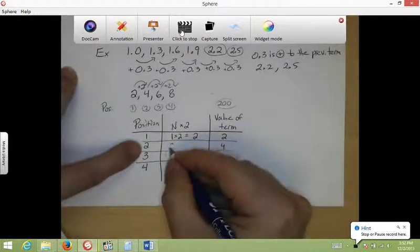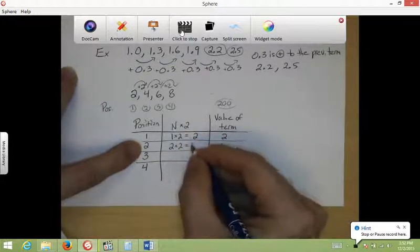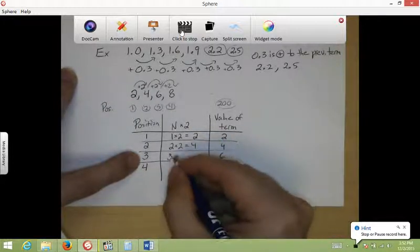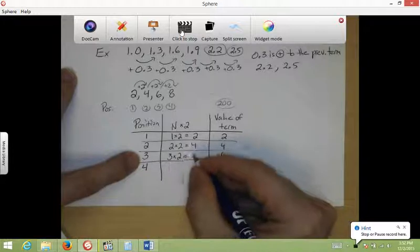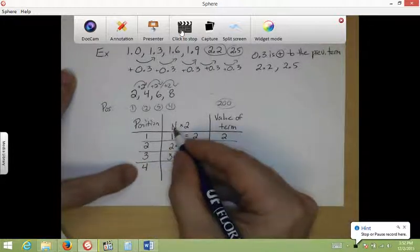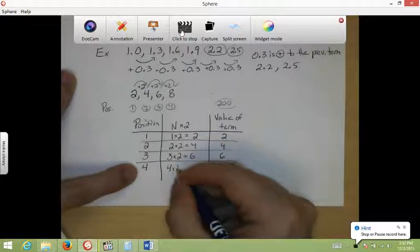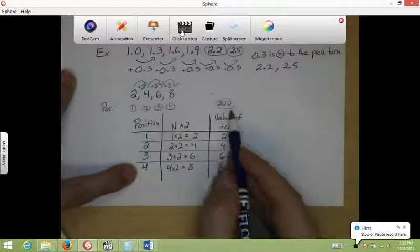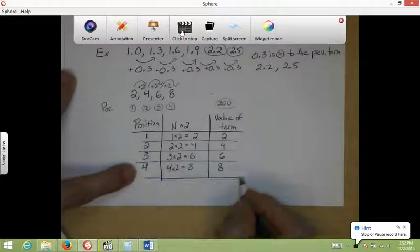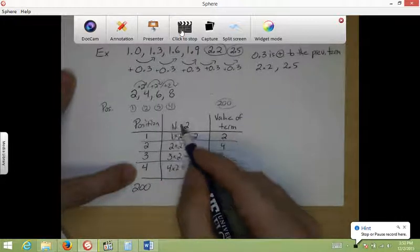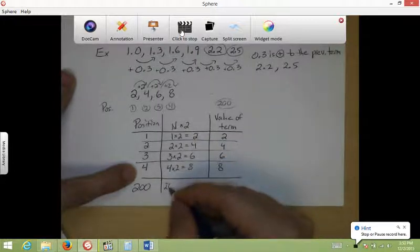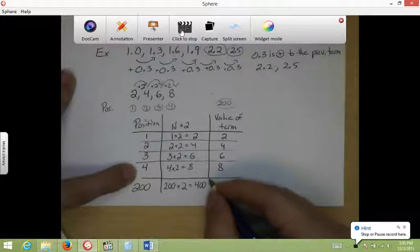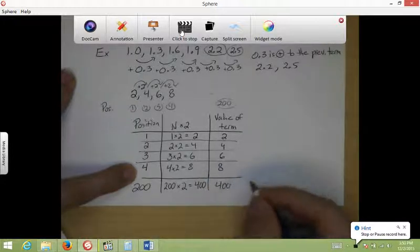Position here is 2, so we're going to do 2 times 2, and that equals 4. That's the value of the term. Position here is 3, so we're going to do 3 times 2, and the value of that's 6. Position here is 4. 4 times 2, and that equals 8, and that's the value of the term that we have there, too. So this formula checks out. So now I want to know what's it going to be in the 200th position. So what I'm going to do is 200 times 2. 200 times 2 is 400, so the value of the term there is 400.